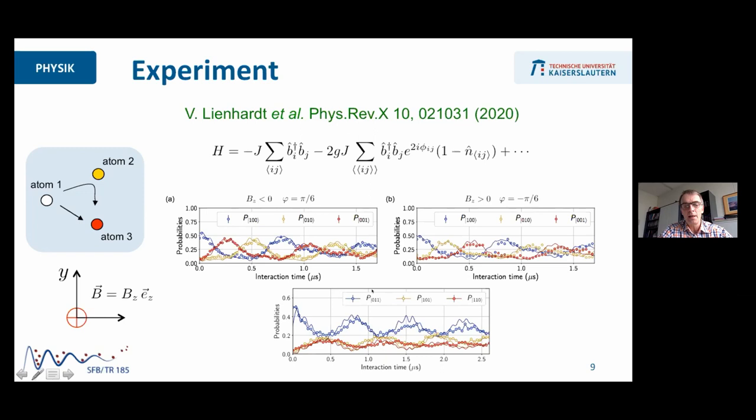If you just put a single excitation on this triangle, then this nonlinear term disappears. You see that there's a real chiral transport of the excitation either clockwise or counterclockwise in this triangle, depending on whether you make the magnetic field positive or negative. This basically proves the existence of this Peierls phase. If you add a second excitation and look at the transport, then you find that this term is gone, and also the chiral transport is gone. This was a beautiful proof that these density-dependent Peierls phases can actually be realized in these Rydberg systems.